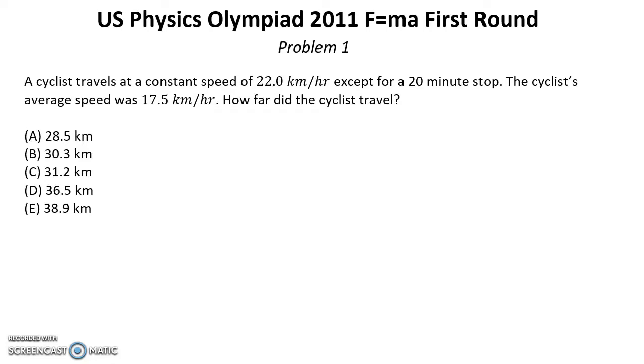First problem. A cyclist travels at constant speed of 22.0 km per hour except for a 20 minute stop. Cyclist average speed was 17.5 kilometers per hour. How far did the cyclist travel?